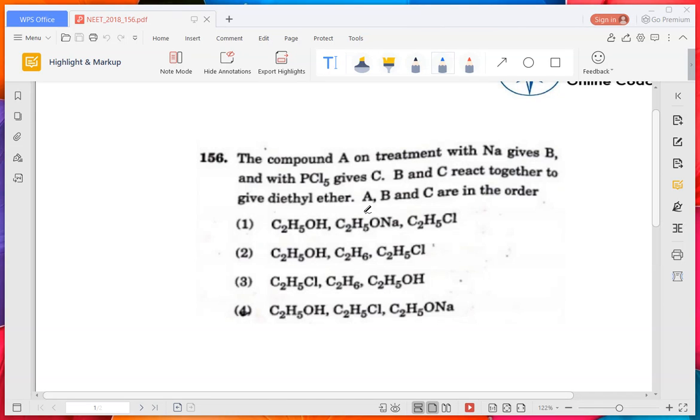This question is the reaction-type question. This type of question is very difficult but very much scoring if you know all the reactions by heart, because reaction-type questions are always asked in your exams. Basically, it's the favorite question of examiners. It's asking about compound A on treatment with Na gives B.